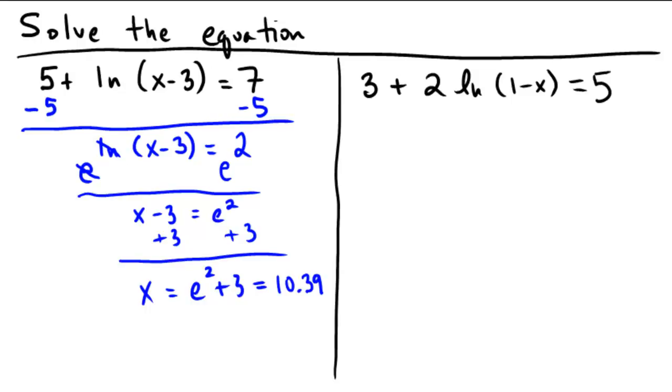On the right hand side. 3 plus 2 ln of 1 minus x equals 5. So first step, we'll subtract 3. So that way we get 2 ln of 1 minus x equals 2.